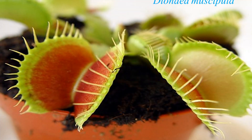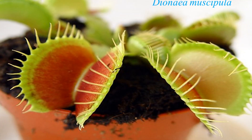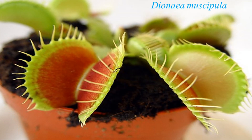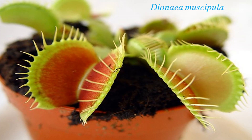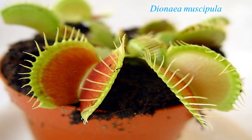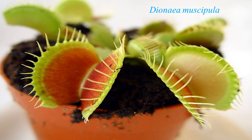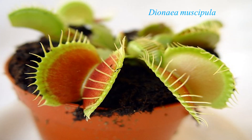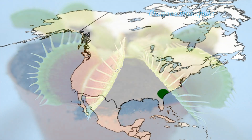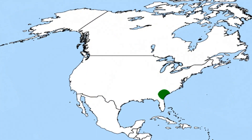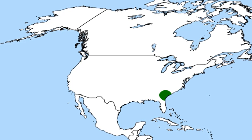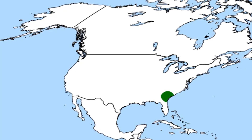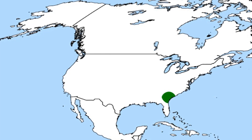The Venus flytrap, belonging to the genus Dionaea, is the first example of a carnivorous plant. Scientifically named Dionaea muscipula, it falls under the category of flowering plants, distinguished by its small white flowers. This plant was first discovered in 1765 by John Bartram during his exploration of the American colonies. John Ellis undertook its description and naming, while Carl Linnaeus, astounded by its characteristics, deemed it a miracle of nature.